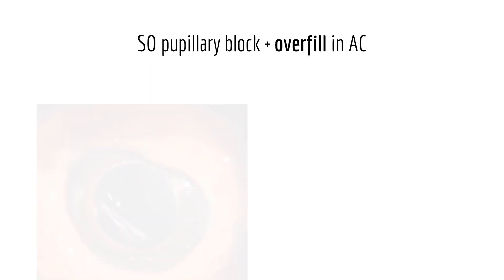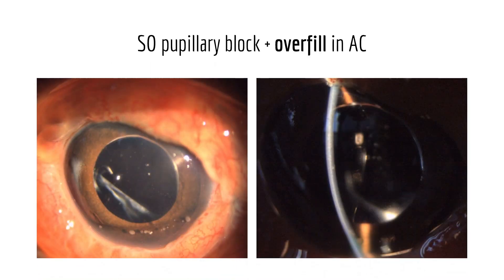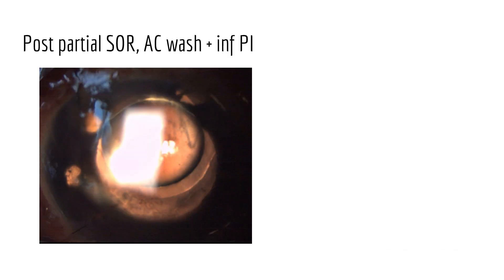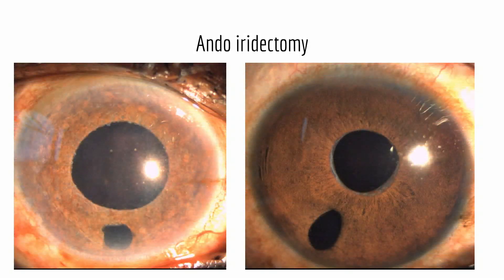Next is a patient who had both silicone oil-induced pupillary block and silicone oil overfill in the AC. Overfill can be diagnosed by a shiny reflex over the iris, as in this patient. We performed a partial silicone oil removal with AC reformation and an inferior surgical PI. Inferior surgical iridectomy is helpful to prevent these problems, especially when silicone oil is used in aphakic and pseudophakic eyes.